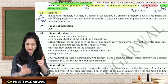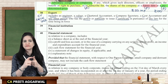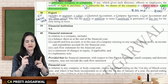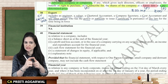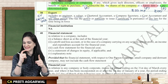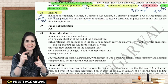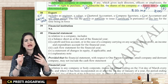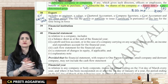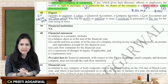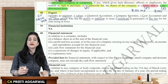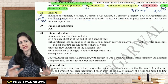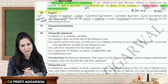So who is an expert? E for engineer, V for valuer, CA, CS, CMA — and any person who has the authority or the right to issue a certificate in pursuance of any law for the time being in force.